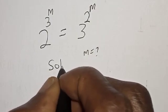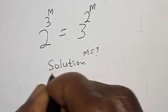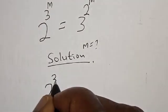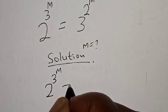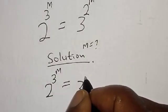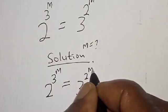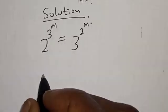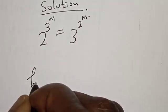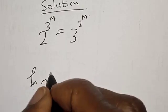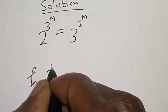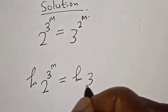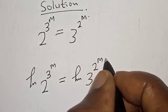Solution. We have the given equation: 2 raised to power 3 raised to power m is equal to 3 raised to power 2 raised to power m. Let's take the natural log of both sides. Then we have natural log of 2 raised to power 3 raised to power m is equal to natural log of 3 raised to power 2 raised to power m.